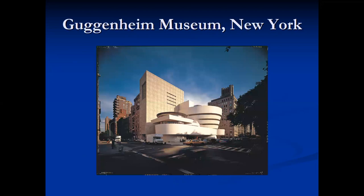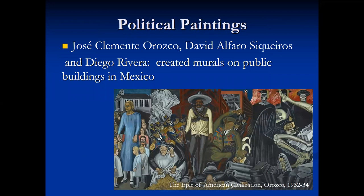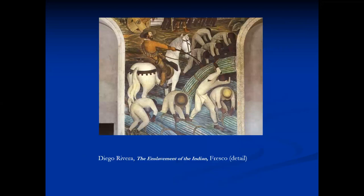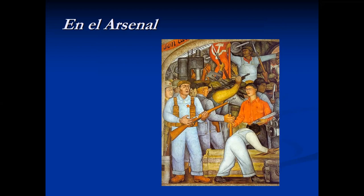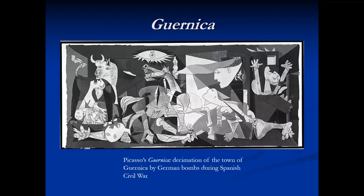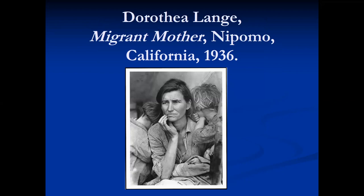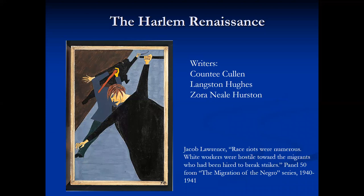Political painters Orozco, Siqueiros, and Rivera created murals on public buildings in Mexico. Diego Rivera's The Enslavement of the Indians expressed criticism of Spain's oppression of the indigenous people in Mexico. Rivera was married to artist Frida Kahlo, shown here as the worker in orange and in her work Self-Portrait with Monkey. Picasso created the large oil painting Guernica after the 1937 decimation of the town of Guernica by German bombs during the Spanish Civil War. Dorothea Lange's 1936 photograph Migrant Mother captures the realities faced by California migrant workers during the Great Depression. In the 1920s and 30s in New York, a movement of Black artists was known as the Harlem Renaissance and included writers such as Countee Cullen, Langston Hughes, and Zora Neale Hurston, and painters like Jacob Lawrence. Panel 50 from his 60-panel migration series depicts the mass movement of African Americans from the south to the urban centers in the north.